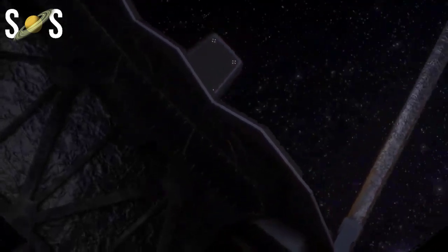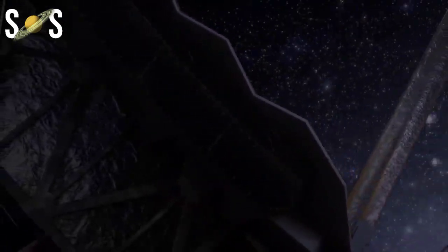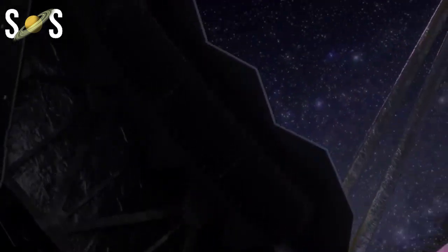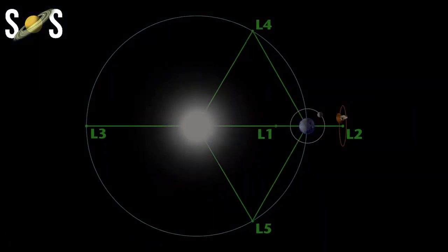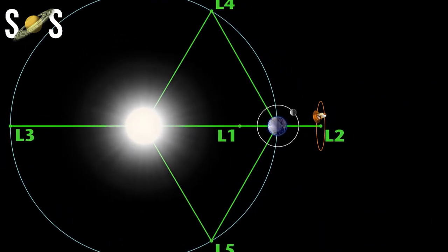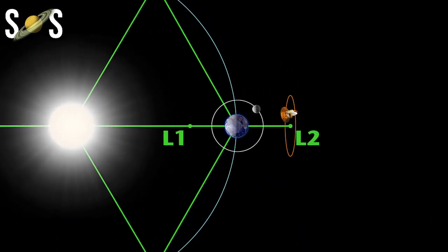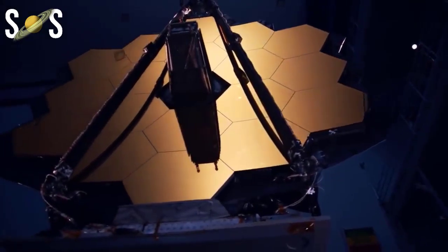The James Webb Space Telescope will not orbit the Earth itself, but rather at a point where the gravitational pulls of the Earth and the Sun equalize each other, called a Lagrange point. Specifically, the observatory will be stationed at the Earth-Sun L2, on the far side of the Earth from the Sun.